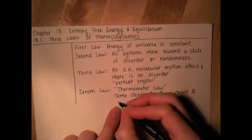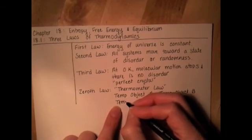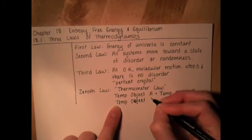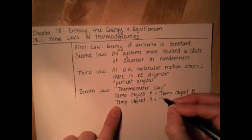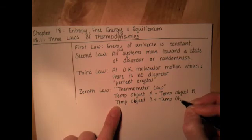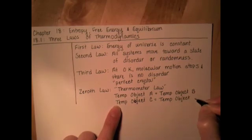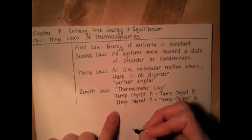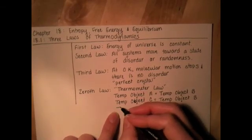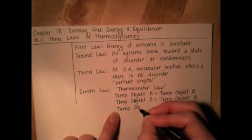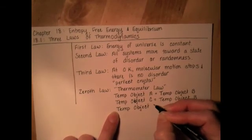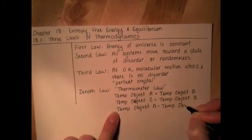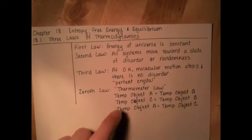And then let's say you bring in a third object, C, and the temperature of object C is equal to the temperature of object B. So the object C is also 10 degrees. And so the zeroth law of thermodynamics then says that the temperature of object A must be equal to the temperature of object C even though you never compared the two of them side by side directly.